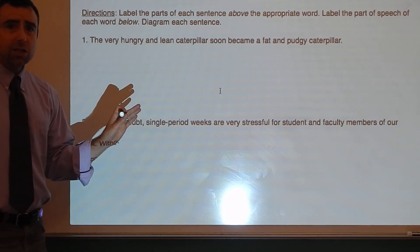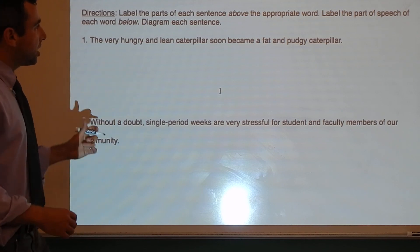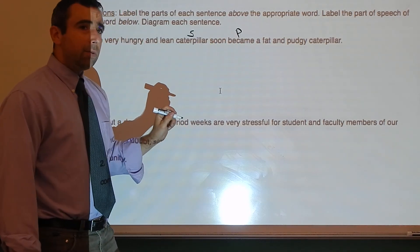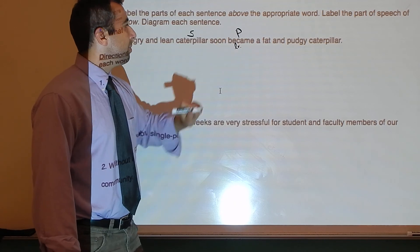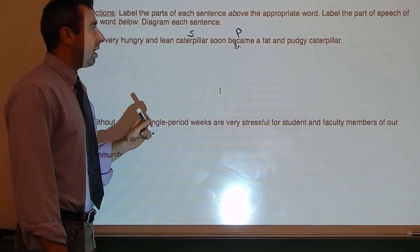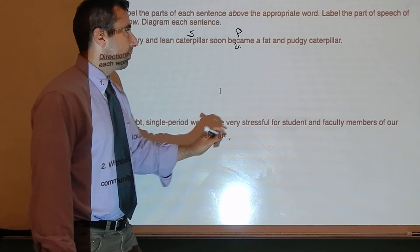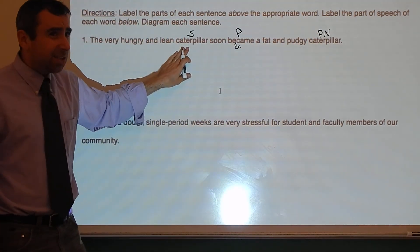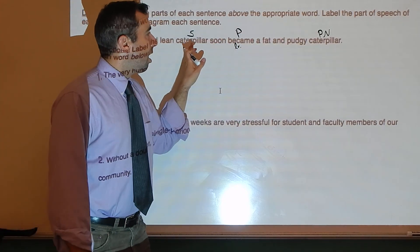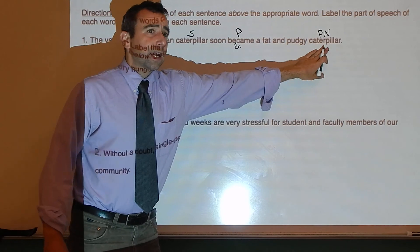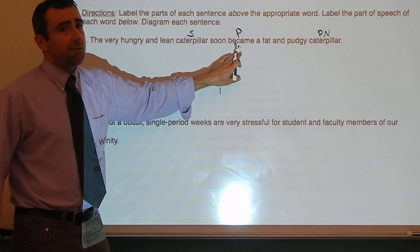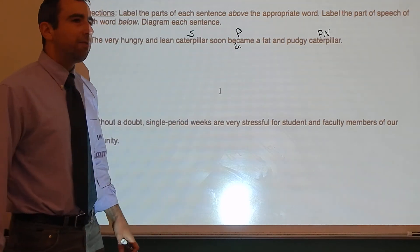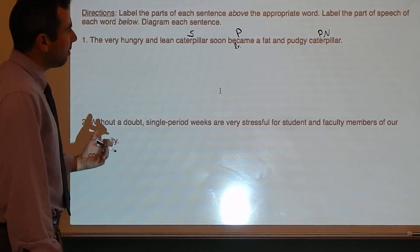This sentence has no prepositional phrases, so there's nothing to put in parentheses. The subject is 'caterpillar,' the predicate is 'became.' Became is a little tricky because it seems like it might be an action verb, but it's actually a linking verb. The caterpillar became what? Caterpillar — that's going to be a predicate nominative because this caterpillar and that caterpillar are the same caterpillar. If the two things are the same, it must be a predicate nominative and became must be a linking verb.